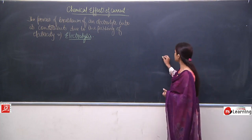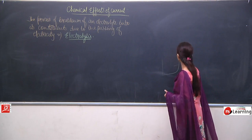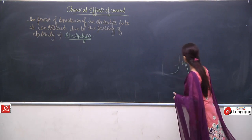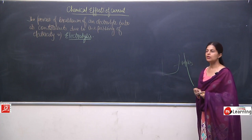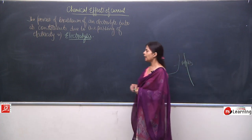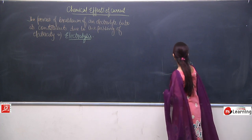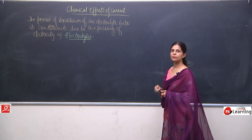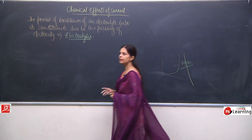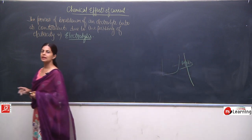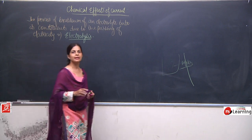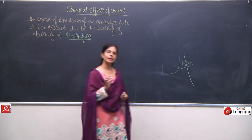When we take AgNO₃ in solution, AgNO₃ gets broken up into its ions. So this is electrolysis, and the solution AgNO₃ is the electrolyte. The breakdown of the electrolyte into its constituent ions is known as electrolysis.